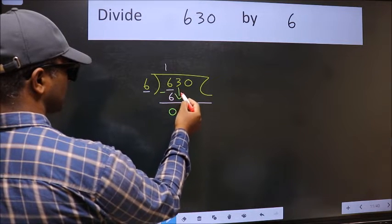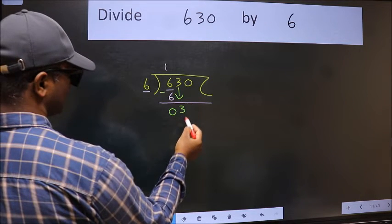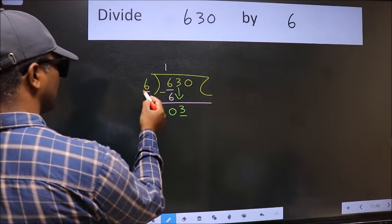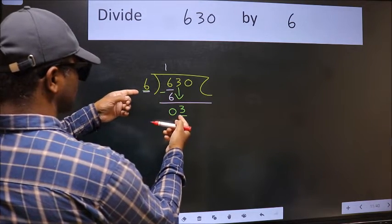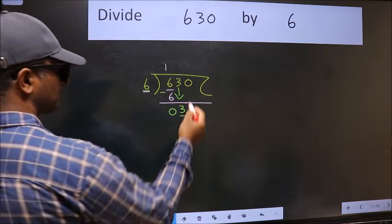After this, bring down the beside number. So 3 down. Now here we have 3 and 6 here. 3 is smaller than 6, so we should bring down the second number.